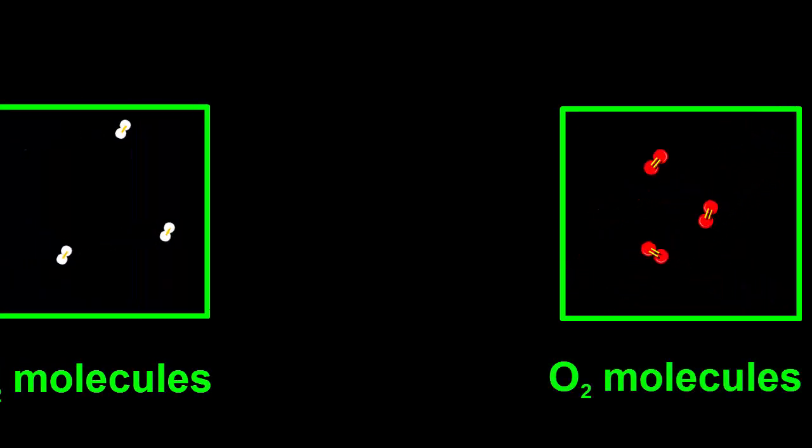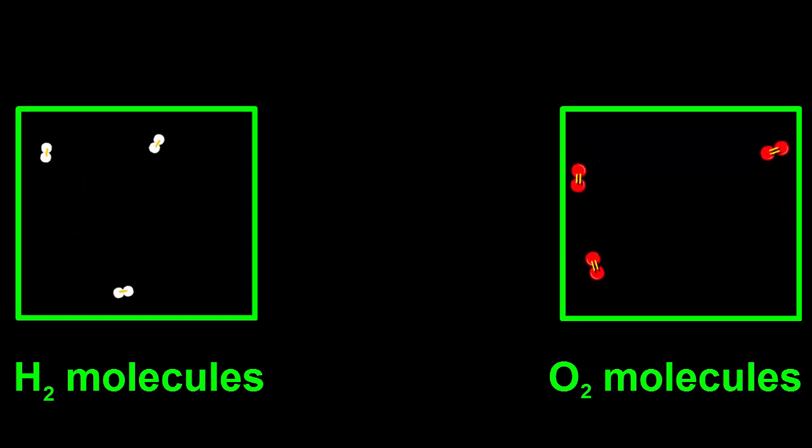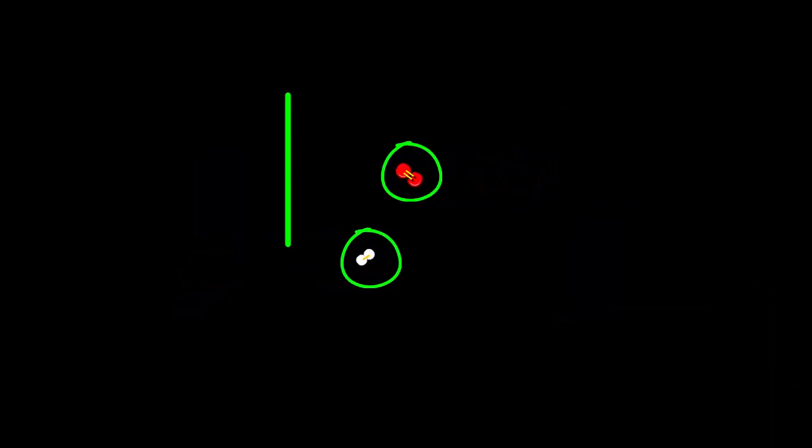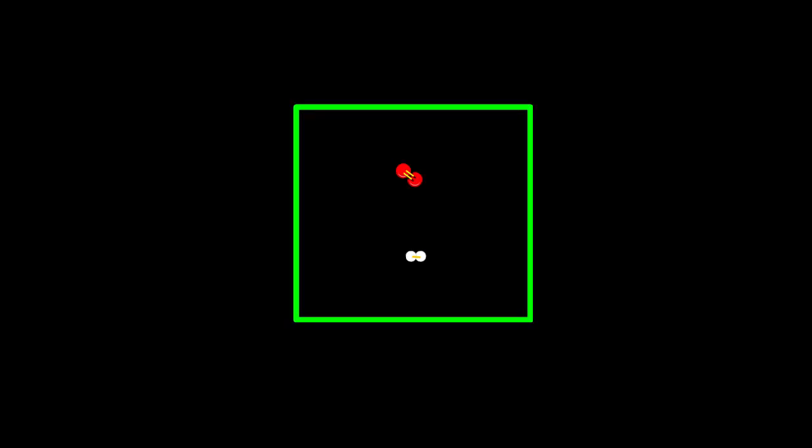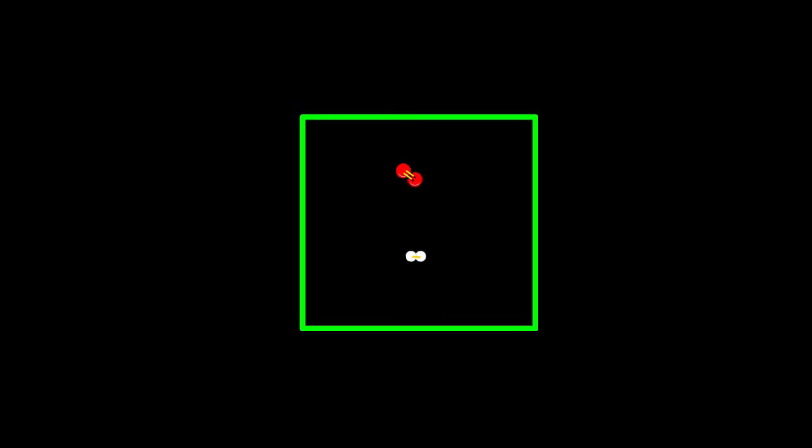H2 and O2 molecules will stay that way unless we do something to change them. What if we put one hydrogen molecule and one oxygen molecule in a box together? In reality, a box filled with gases would contain trillions of trillions of molecules. But we just want to look at the action of individual ones.